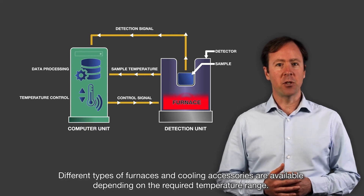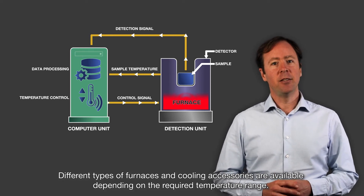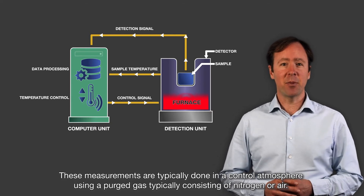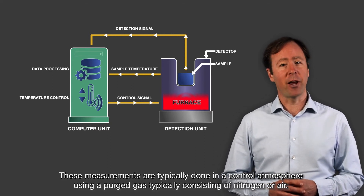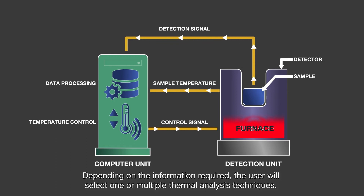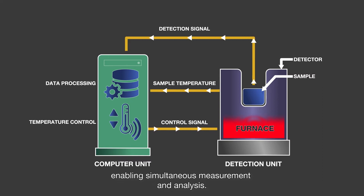Different types of furnaces and cooling accessories are available depending on the required temperature range. These measurements are typically done in a controlled atmosphere using purge gas, typically consisting of nitrogen or air. The temperature control, data recording and analysis are all computer controlled. Depending on the information required, the user will select one or multiple thermal analysis techniques. The computer can be connected to several instruments enabling simultaneous measuring and analysis.